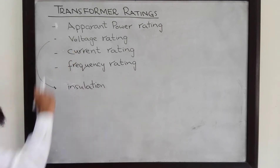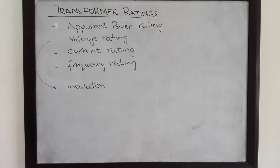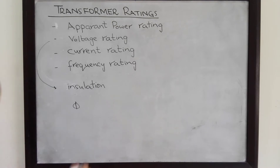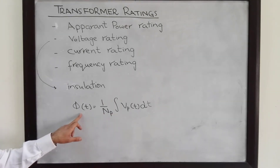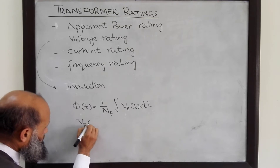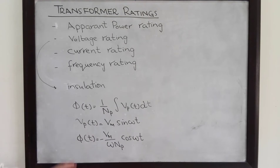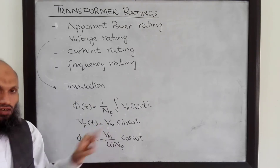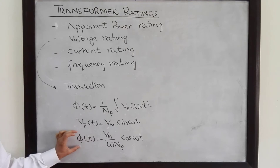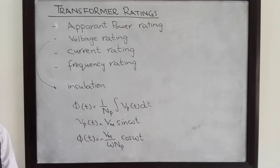There is another aspect which limits the maximum voltage that can be applied to the transformer. To understand it, let's see the relationship between the flux and the voltage. We know that the flux in the transformer is related with the voltage by this expression: phi(t). This relation relates the flux flowing in the transformer and the primary voltage applied. If we apply this primary voltage vp(t), then the flux will be given by this relation — that is, the maximum value of the flux depends upon the maximum value of the applied voltage. And if there is an increase in the maximum value of the applied voltage, there will be an increase in the maximum flux flowing through the transformer.